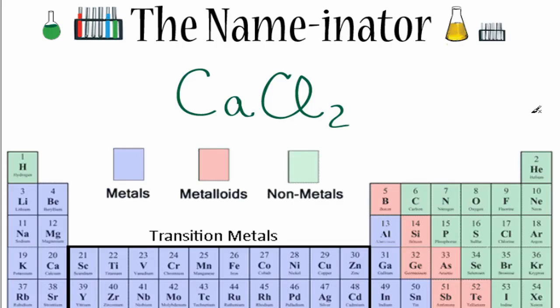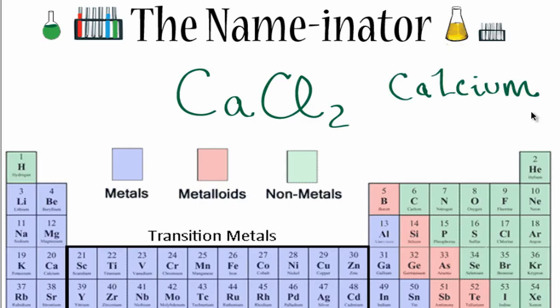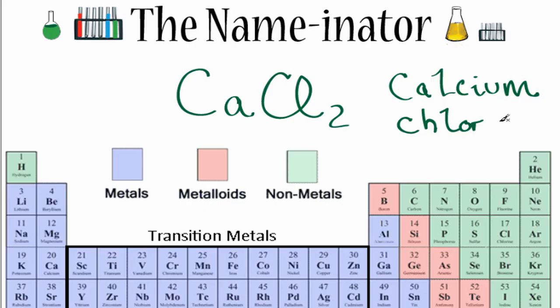To name binary ionic compounds, we take the name of the metal, Ca, and write it just like we find it on the periodic table: calcium. Next we find the name for Cl, which is chlorine, but we get rid of the I-N-E ending and then we add I-D-E. So for CaCl2, we end up with calcium chloride.